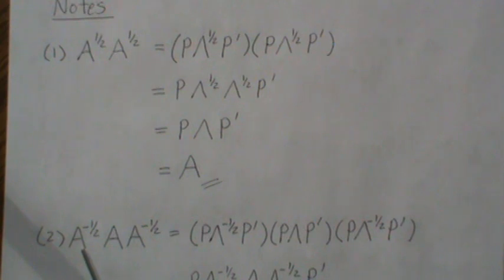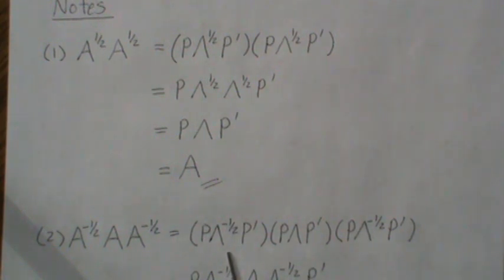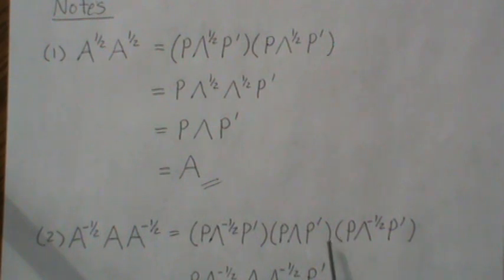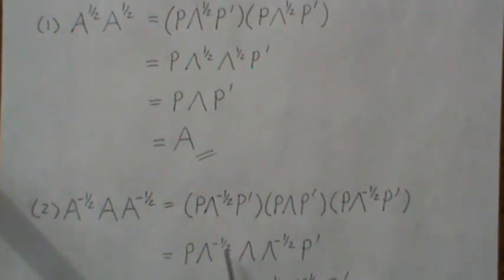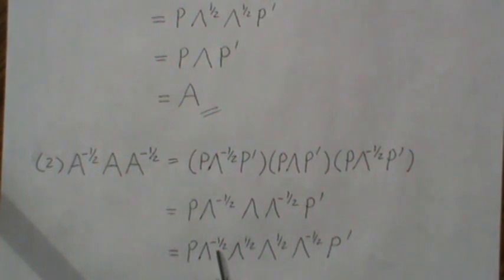So now, if we look at A to the minus one-half, A, A to the minus one-half, and we plug in our definitions for each of those and look at this matrix product, P prime P is the identity matrix, so those go away, and we're just left with this. But lambda can be broken up into the product of two square root matrices — lambda to the half times lambda to the half — but then lambda to the minus one-half and lambda to the one-half gives the identity matrix.